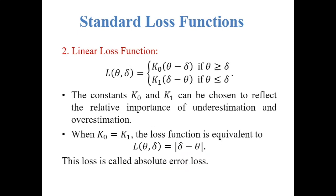The second loss function is the linear loss function, defined as: L(theta, delta) equals K0 times (theta minus delta) if theta is greater than or equal to delta, and K1 times (delta minus theta) if theta is less than or equal to delta. Here K0 and K1 are two constants. By choosing different values of K0 and K1, this loss function gives different weights to underestimation and overestimation. When K0 equals K1, the loss function is equivalent to the absolute error loss function, defined as the absolute value of delta minus theta.